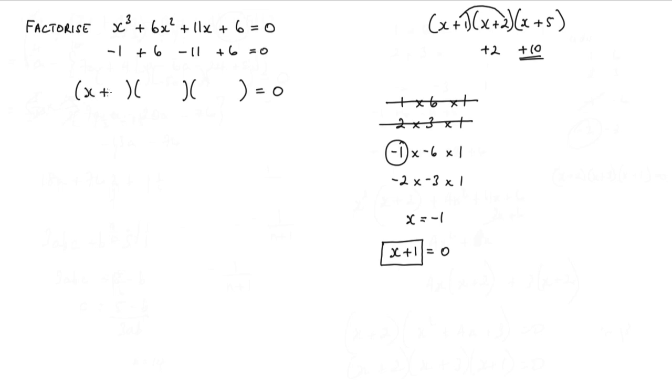So x plus 1. Let's go ahead and try another value here, let's try negative 2. If I put negative 2 into here, negative 2 cubed is negative 8. We put negative 2 into here, we'd get 4 times 6, that would be plus 24. Put negative 2 into here, we'd have negative 22, and then we'd get a plus 6. And that is also equal to 0.